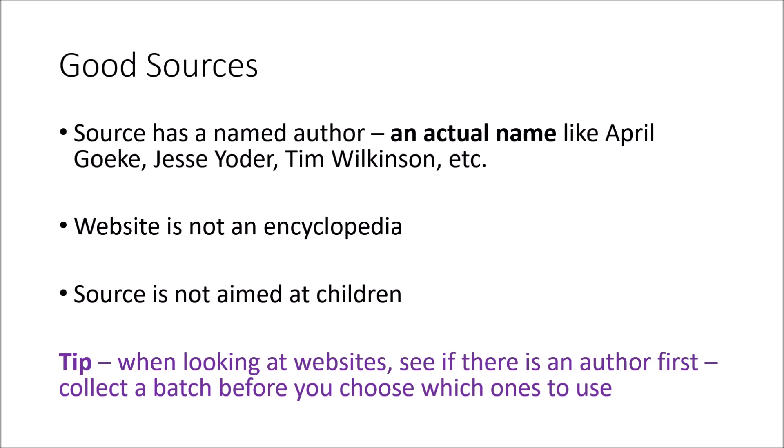Another thing I expect is you should not be using encyclopedias for your paper. When you get into college, using encyclopedias is frowned upon, so you shouldn't be citing Wikipedia or Britannica. That said, it is okay to start there for background information. It's also helpful to look at the sources listed underneath a Wikipedia article — you can go to those sources, and if they have a named author, you can use them in your paper, but not the Wikipedia article itself.